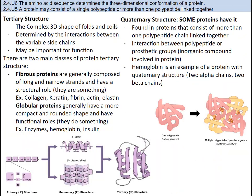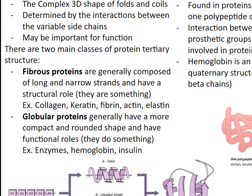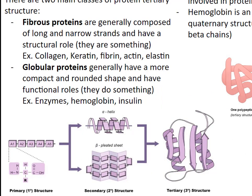The overall three-dimensional configuration of a protein is referred to as the tertiary structure. The tertiary structure of a polypeptide chain will be determined by the interactions between the variable side chains. These interactions may include hydrogen bonds, disulfide bridges, ionic interactions, and polar associations, among others. There are two main classes of tertiary protein structure: fibrous proteins and globular proteins. Fibrous proteins are generally composed of long and narrow strands and have a structural role. Examples include collagen, keratin, fibrin, actin, and elastin. Globular proteins generally have a more compact and rounded shape and have functional roles — examples include enzymes, hemoglobin, and insulin.